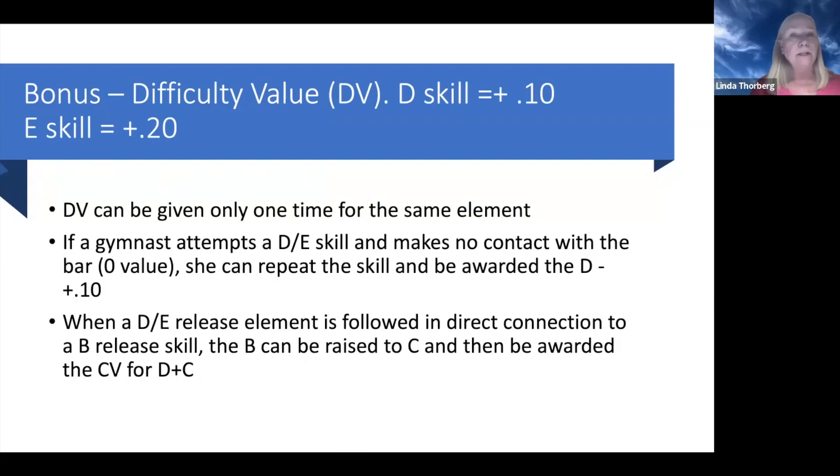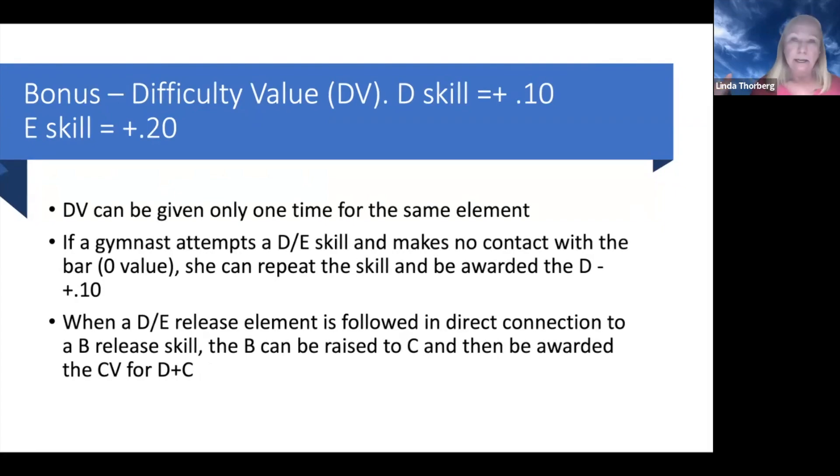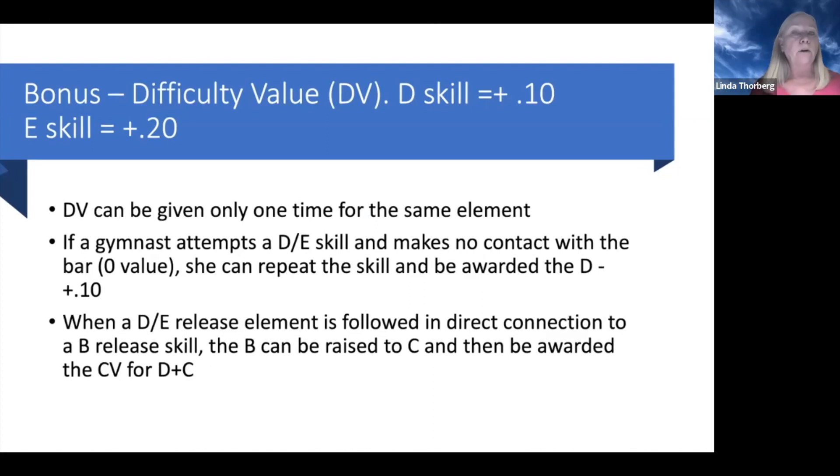Remember, level 10 doesn't have any restrictions. They can do everything, D's and E's. But if you do a D, you can only give D bonus credit for it one time. So she could do a Tokachev, then go back and do another one later. She's not going to get another D bonus for the second one.